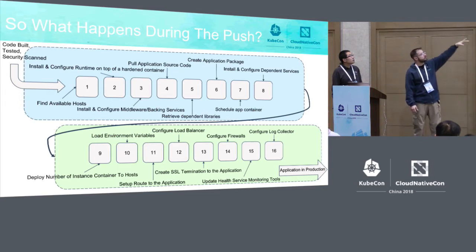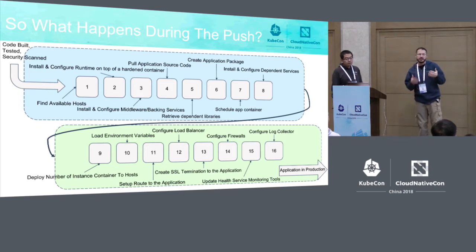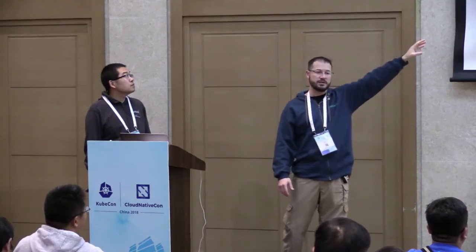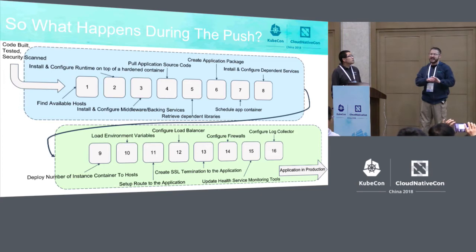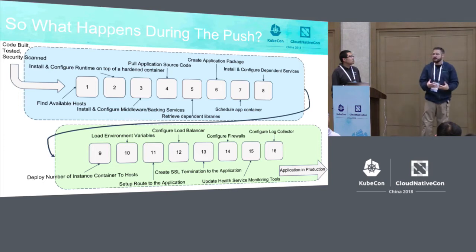We pull the application source code, create the package, configure dependent services, and schedule the container to start. Then for production quality: if we want high availability, we consider things like an entire availability zone going down or an entire region going down. We scale instances across different availability zones and regions. We handle routing, SSL termination, load balancer configuration — all automatically. This is applied consistently against every single application. The developer doesn't need to know how SSL termination or load balancing works. We take all that away from them.